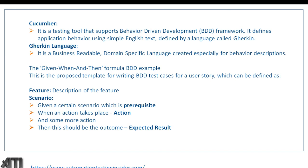Cucumber is the tool we are going to use to implement the BDD framework. It is a testing tool that supports BDD and defines application behavior using simple English text defined by a language called Gherkin. Gherkin is a business-readable, domain-specific language created especially for behavior descriptions. It has certain keywords — Given, When, and Then — which are used to write scenarios in the feature file.